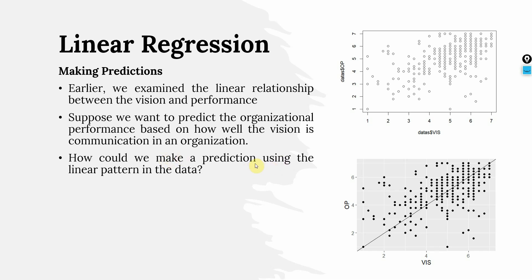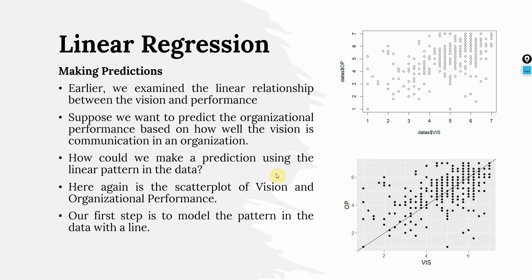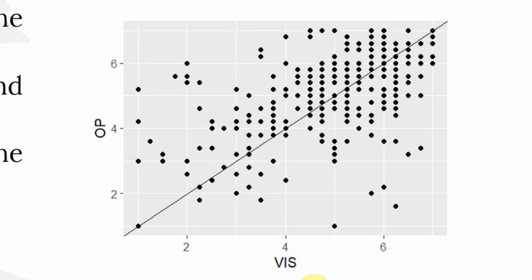How could we make a prediction using the linear pattern in the data? Here again is the scatter plot of vision and organizational performance. Our first step is to model the pattern in the data with a line.